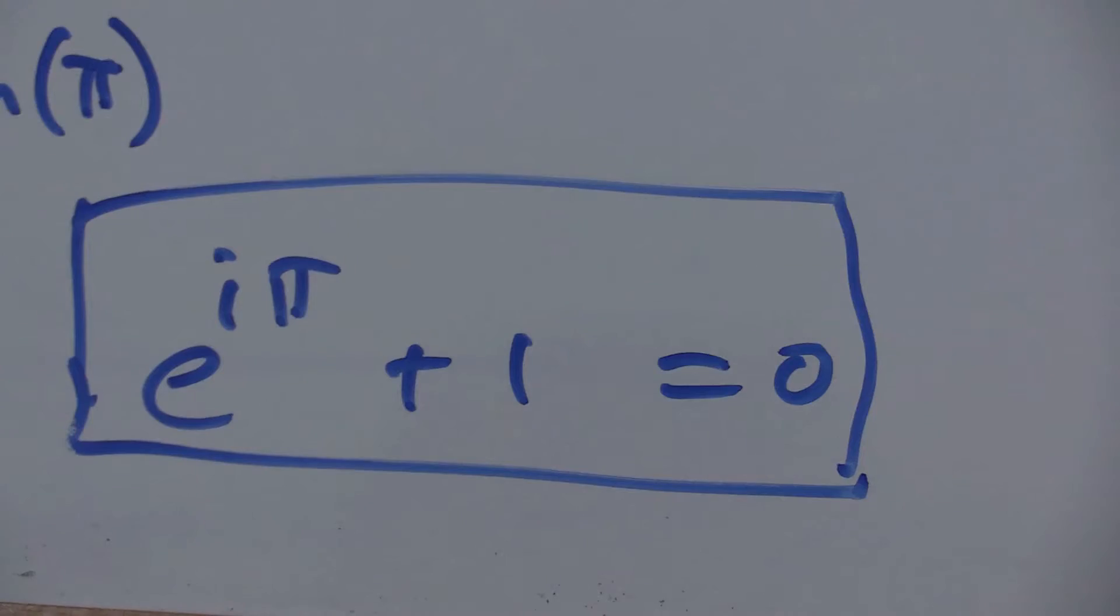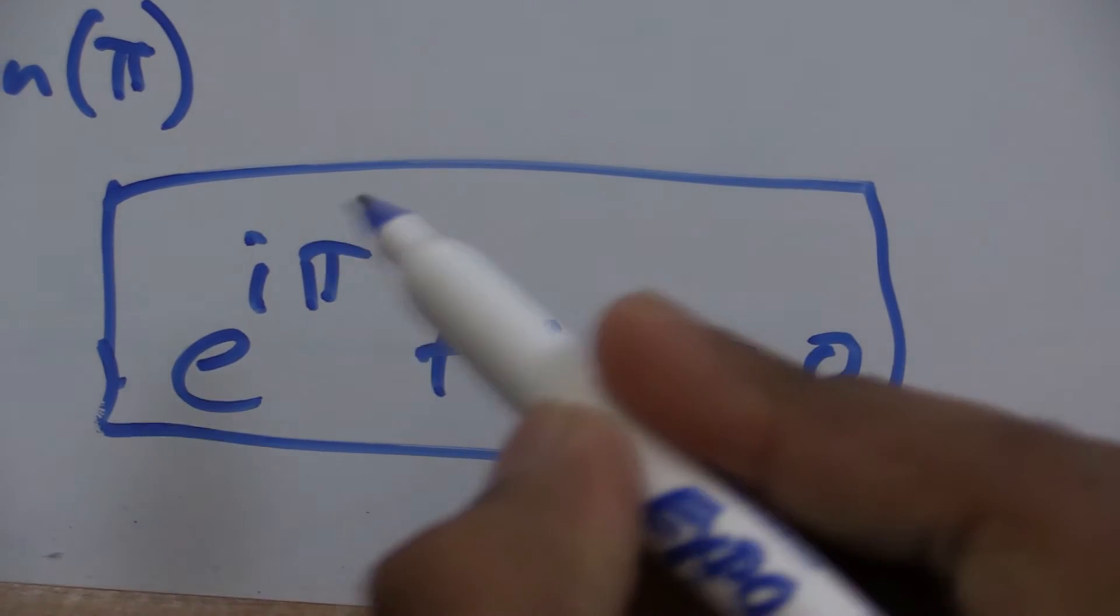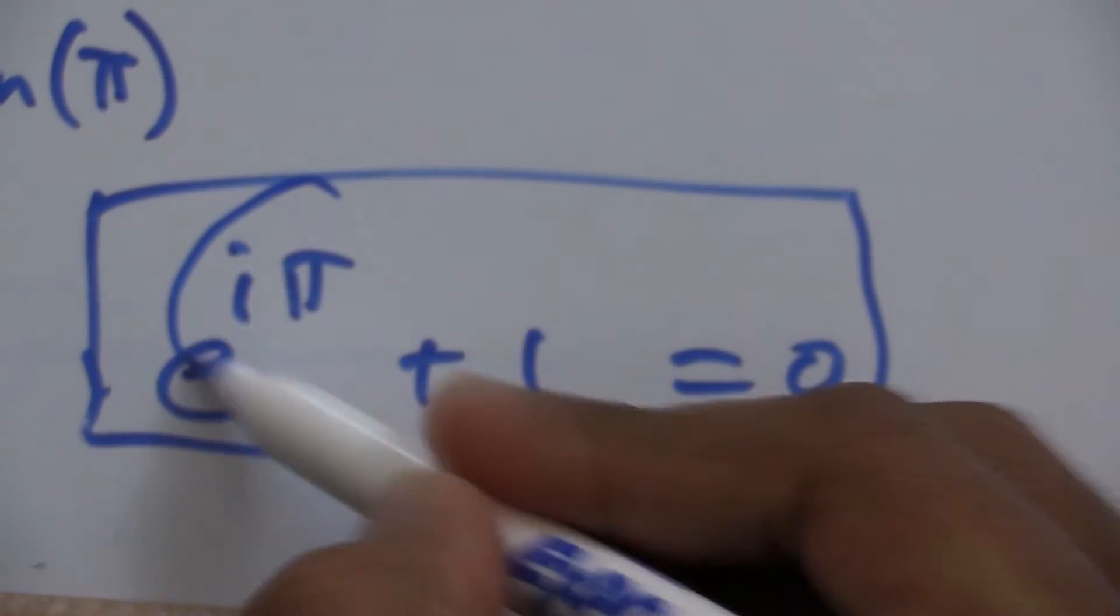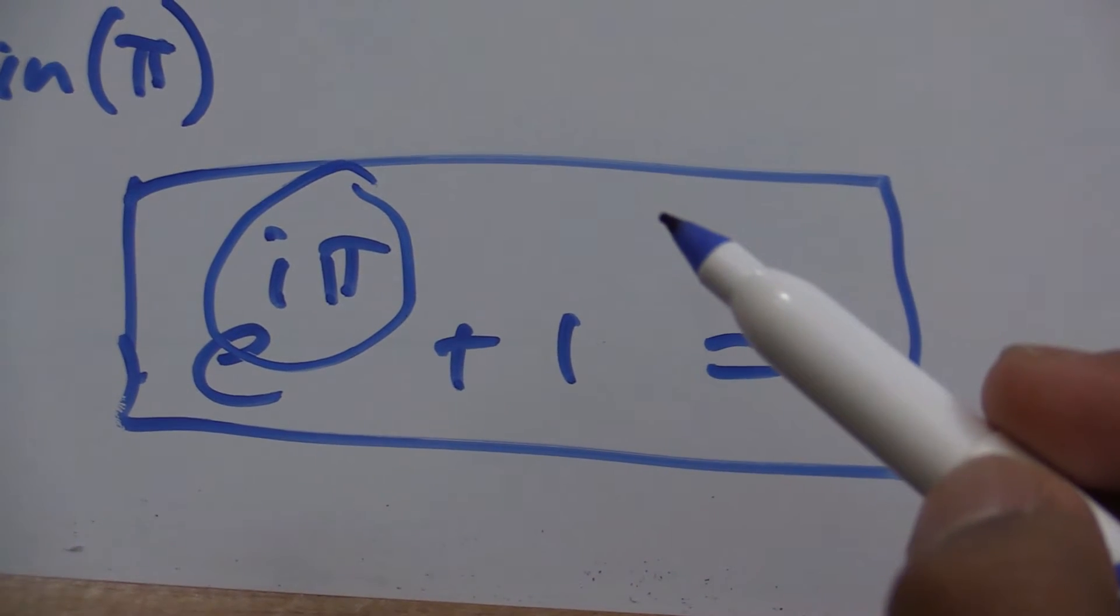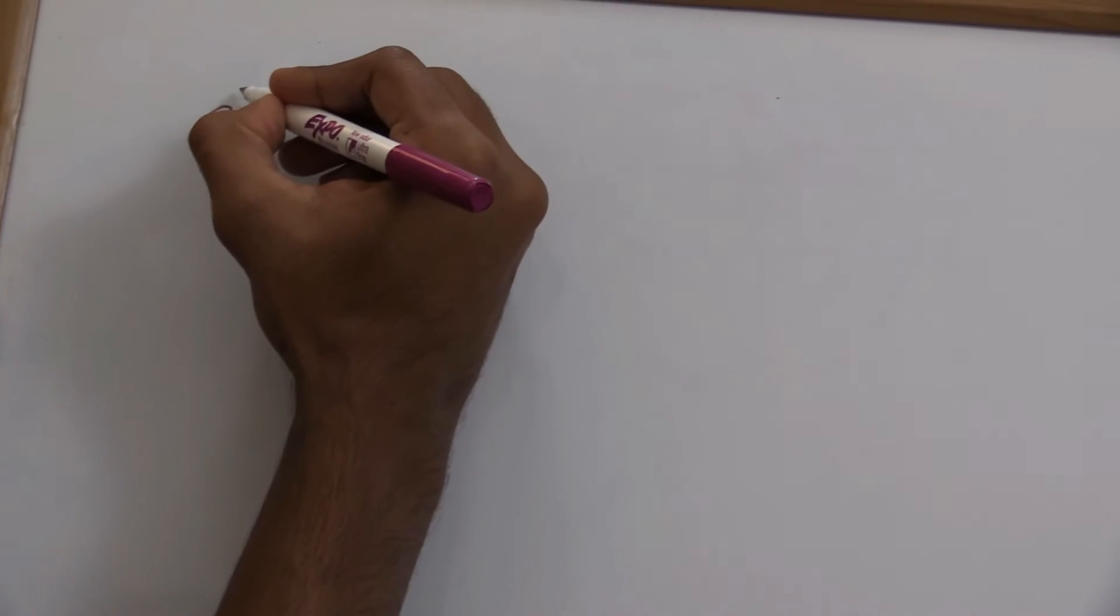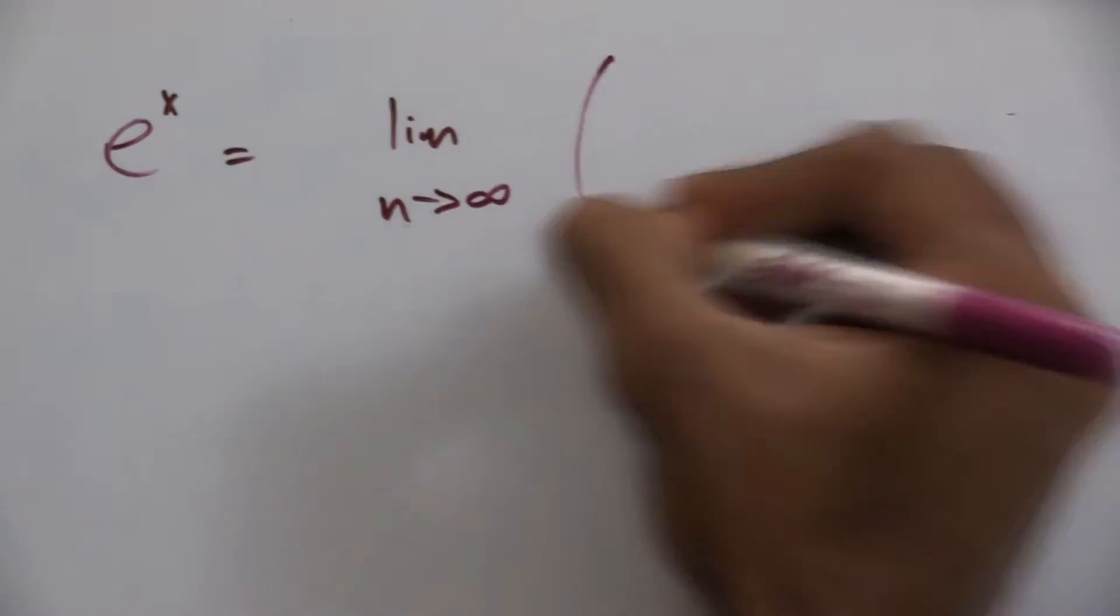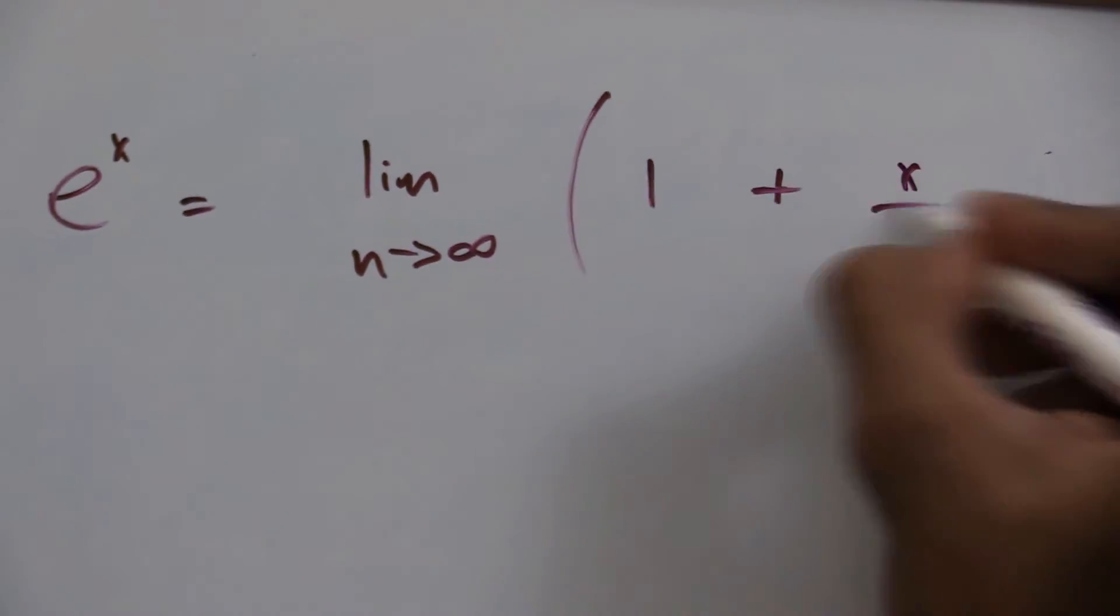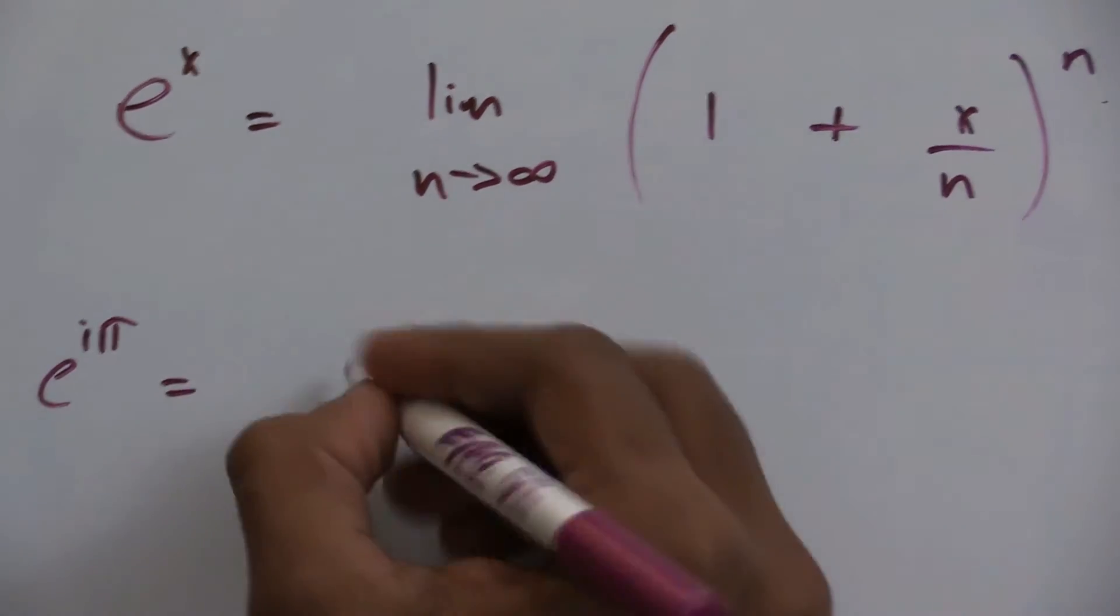This proof still doesn't make much sense at an intuitive level, but at least you see how I've connected i and π by drawing a circle on the complex plane. Let's make sense of how e is connected. I'll look at the definition of raising e to an exponent: e to the x equals limit as n goes to infinity of 1 plus x over n to the nth power.